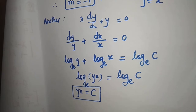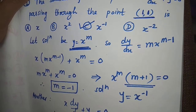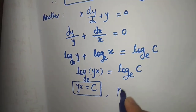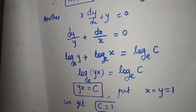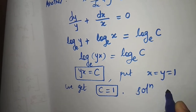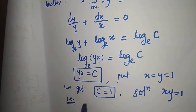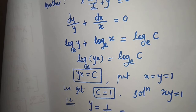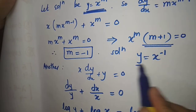To find out the value of c we use the initial condition that the solution must pass through the point (1, 1). Put x equal to 1 and y equal to 1 in yx equal to c to get c equal to 1. Putting c equal to 1 back, the solution is xy equal to 1, that is y equal to 1 by x, which is x inverse — the same answer as found by the first method.